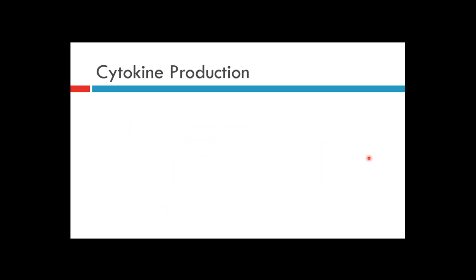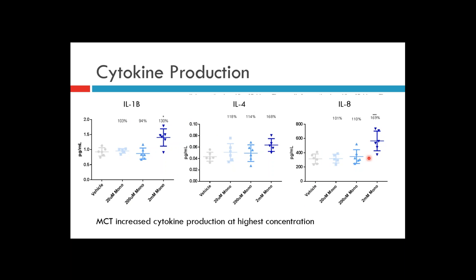We looked at a panel of cytokines, and the ones that changed significantly were interleukin-1 beta, interleukin-4, and interleukin-8 — all increased, but only at the highest concentration of monocrotaline. Interestingly, all the elevated cytokines are inflammatory cytokines, and these increases indicate an ongoing inflammatory response, which is also a characteristic of monocrotaline-induced liver pathology. Recall that the mechanism involves a substantial inflammatory component in monocrotaline-induced liver injury — so this was an impressive finding.